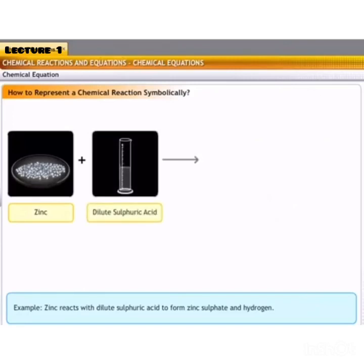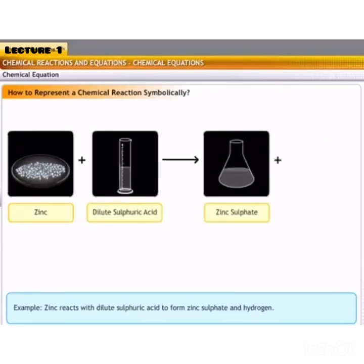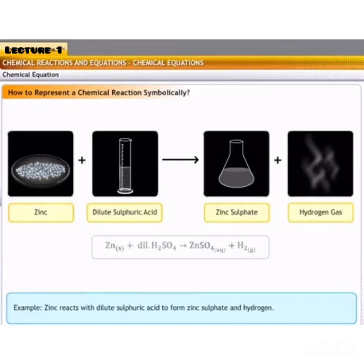For example, as we have seen, zinc reacts with dilute sulphuric acid to form zinc sulphate and hydrogen gas. So, symbolically, solid zinc reacts with dilute sulphuric acid to form aqueous solution of zinc sulphate and hydrogen gas.